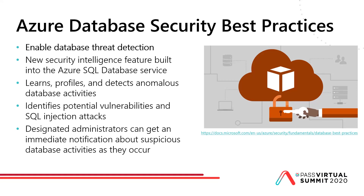The SQL Database threat detectors use one of two detection methods. Deterministic detection detects suspicious patterns that are rules-based and match known attacks. This method has high detection and low false positives, but limited coverage, falling within atomic detections. Behavioral detection detects abnormal activity in the database that has not been seen during the most recent 30 days.